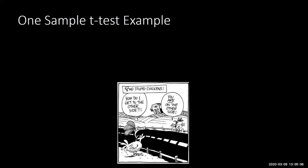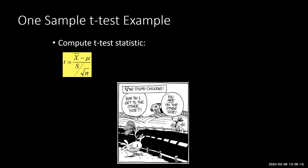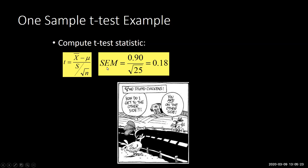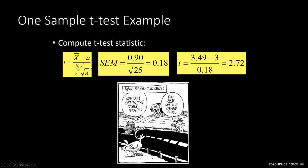Now we do step four — compute our test statistic. We're setting it equal to T, no longer Z. I like to solve from the bottom up, so I'll solve the denominator first, which is still called the standard error of the mean. From the prompt, standard deviation is 0.9 and n is 25. So we take 0.9 divided by the square root of 25, giving a standard error of 0.18. Putting that back into the formula, we get a T-score of 2.72.